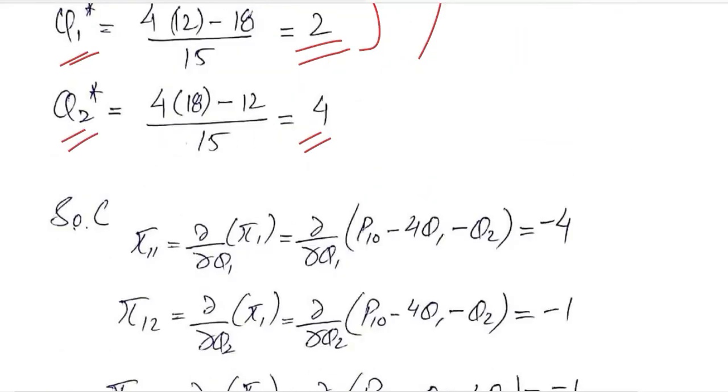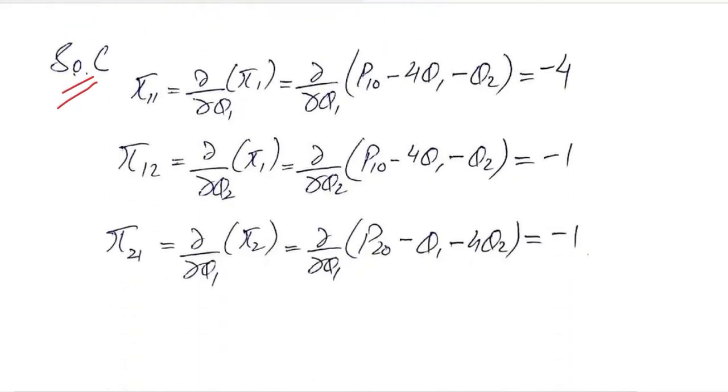After finding the critical values of Q₁ and Q₂ in numerical form, we can move towards the second order conditions. For that we have to calculate these four or three partial second order derivatives.